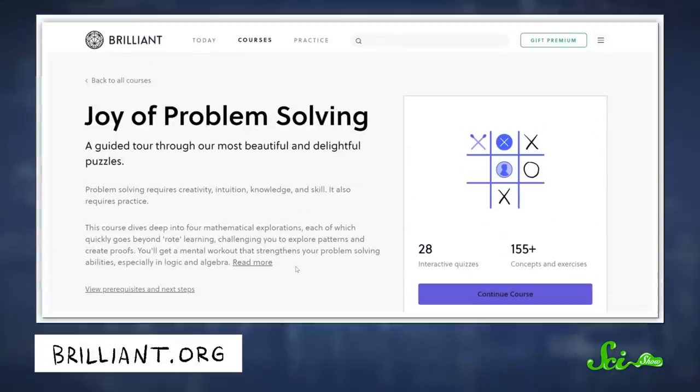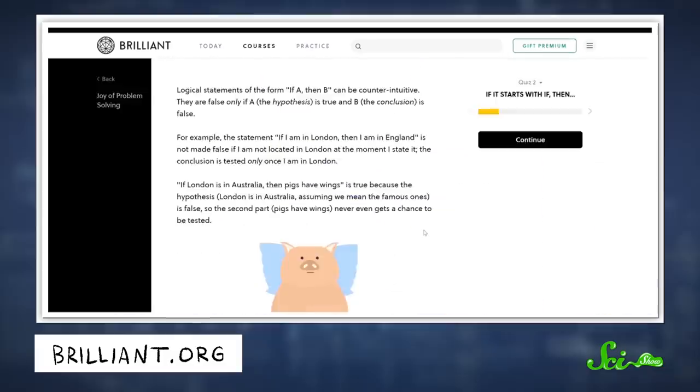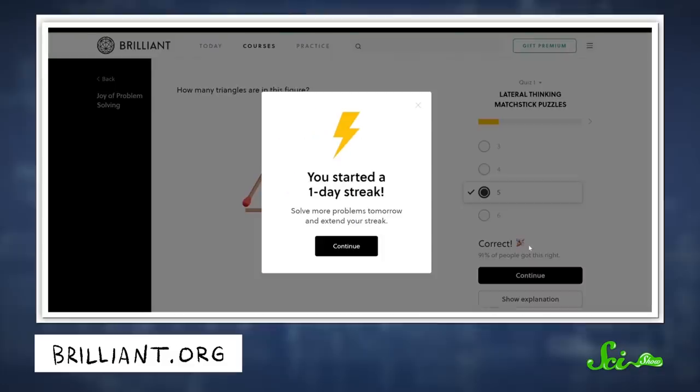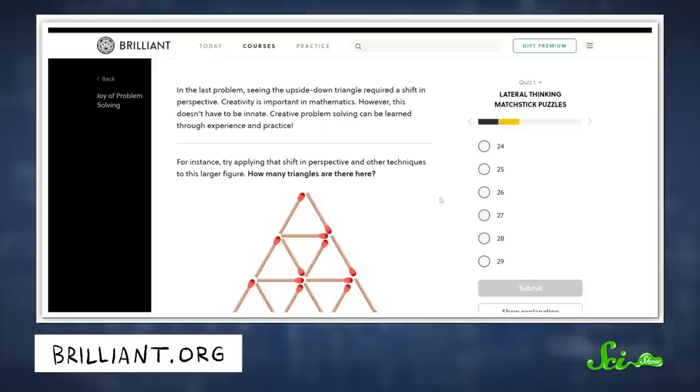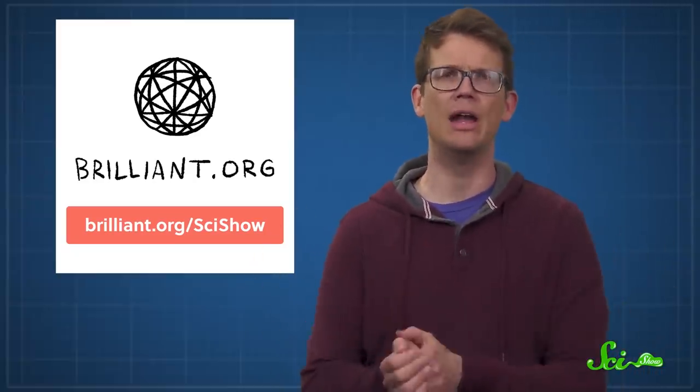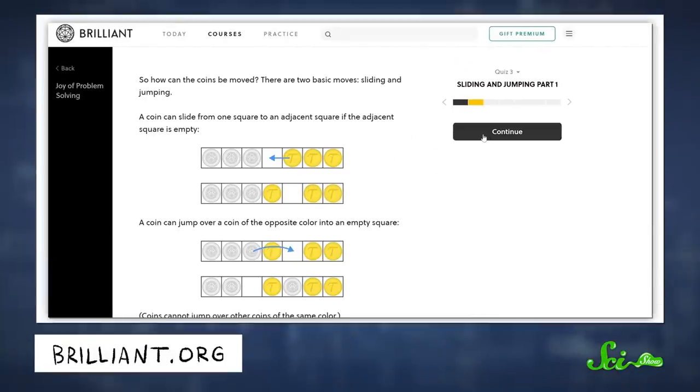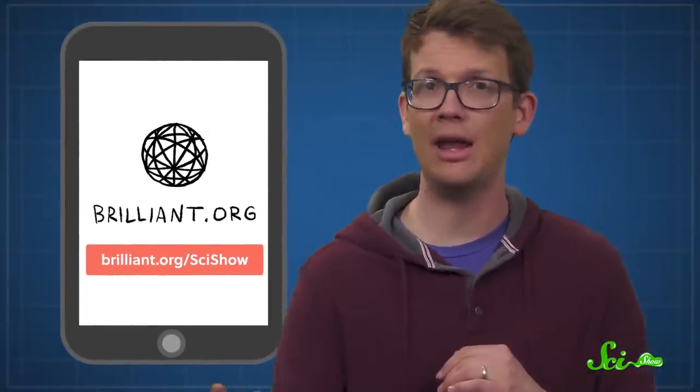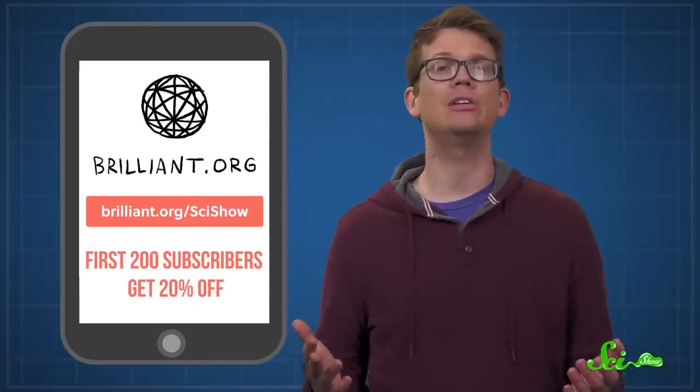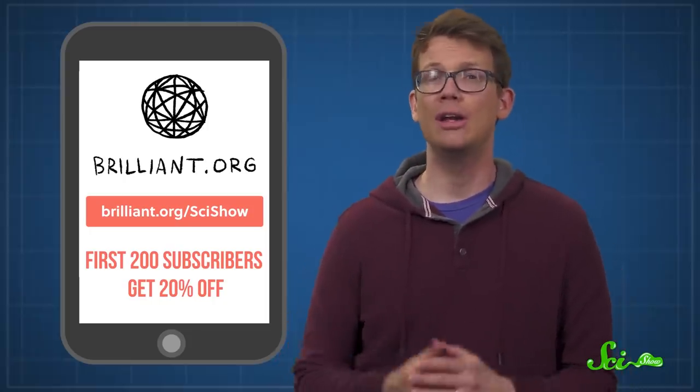If you're in the mood for a break from the news, you might enjoy a bit of puzzle-solving. Brilliant's course Joy of Problem Solving is packed full of mind-bending challenges. You'll give your brain a workout solving them, and you'll be learning the rules of logic and algebra along the way. Brilliant is an online learning platform that offers a ton of guided problem-solving-based courses just like that one. Each hands-on course has interactive elements designed to engage your brain and help you hone your math and science skills. And courses can even be downloaded to learn offline via their iOS and Android apps. Right now, the first 200 people to sign up at Brilliant.org slash SciShow will get 20% off the annual premium subscription. So if you're interested, it's a great time to check them out.